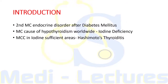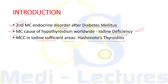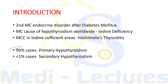Hypothyroidism is the most common endocrine disorder after diabetes mellitus, so it is the second most common endocrine disorder. The most common cause worldwide is iodine deficiency, and the most common cause in iodine-sufficient areas is Hashimoto's thyroiditis, followed by iatrogenic causes. In 99% of cases it is primary hypothyroidism, and secondary causes are responsible for less than 1% of cases.